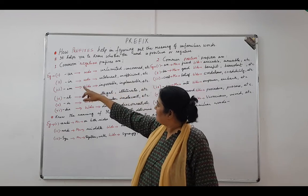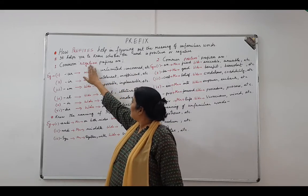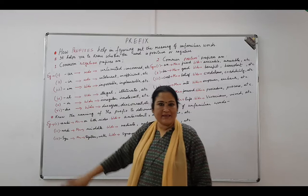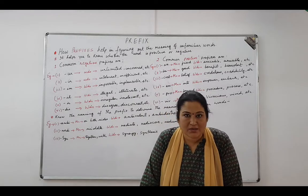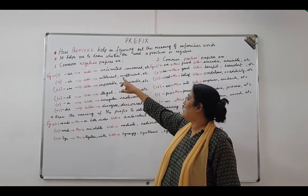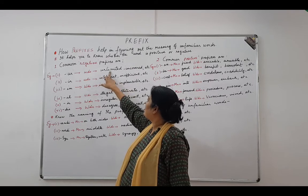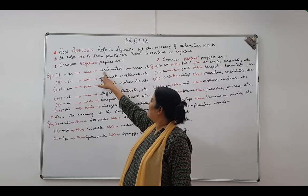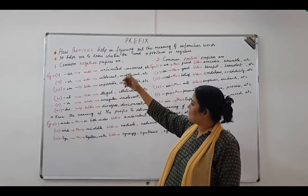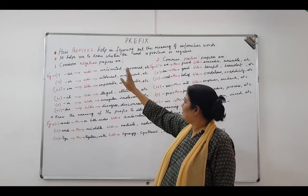The first one I have picked up is 'un'. All the negative prefixes — un, in, im, il, ir, and dis — they all mean 'not' or 'opposite of'. So let's look at 'un' and the words created from it. If we add the prefix 'un' to 'limited', then we have 'not limited'. So all these prefixes give you a clear indication: if it is 'unlimited' or 'uncovered', then it means not covered, not limited.